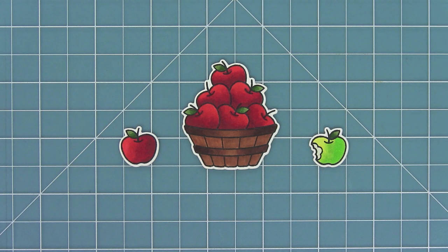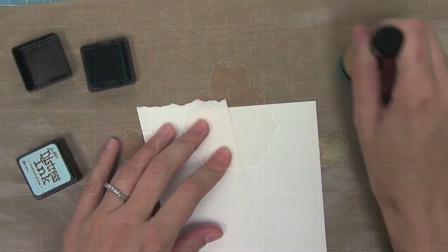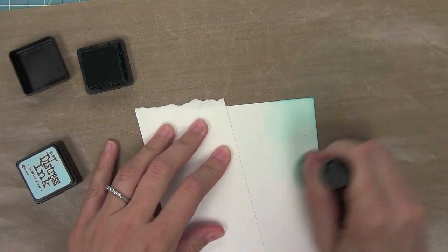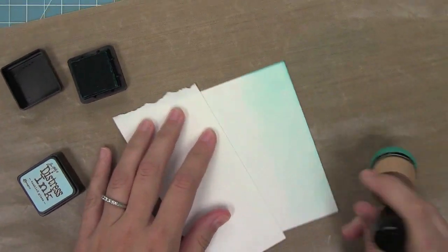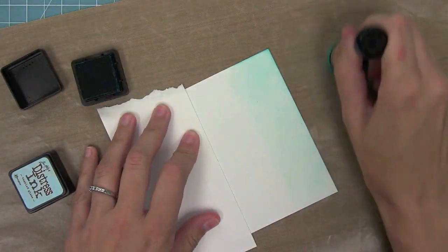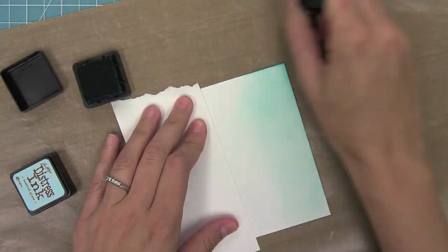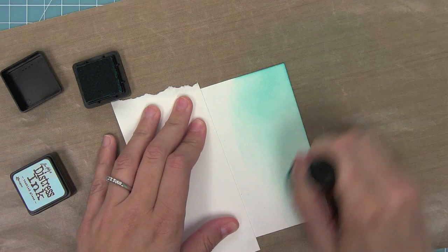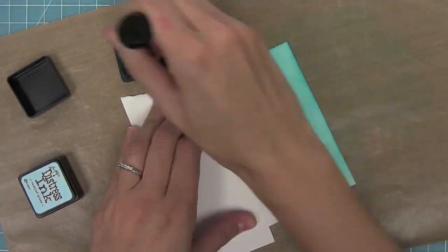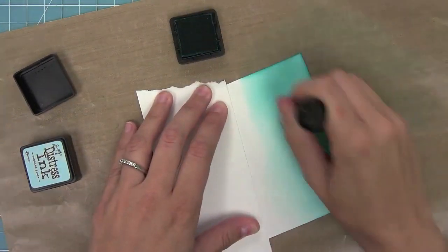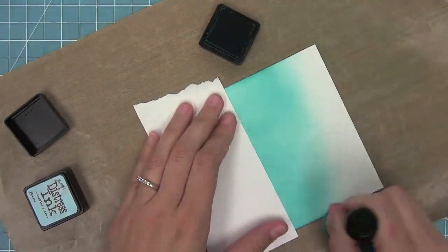Next it's time to create a background for these apples. I thought a nice blue gradient sky would be fun, so I'm using Peacock Feathers Distress Ink. I'm starting off of the cardstock and then moving on to it to make sure that I don't have any harsh edges, and I'm going to keep doing this over and over again to build up the color to a nice dark rich color.